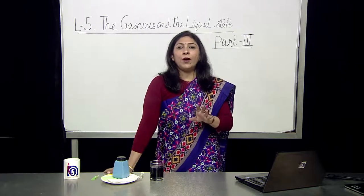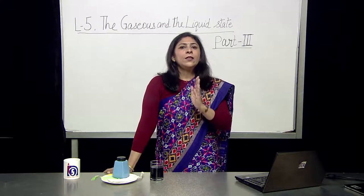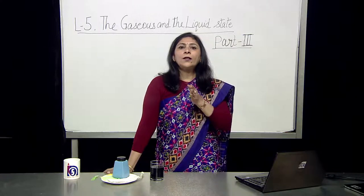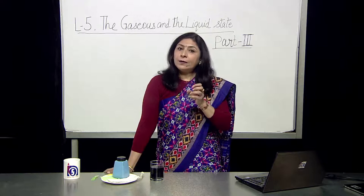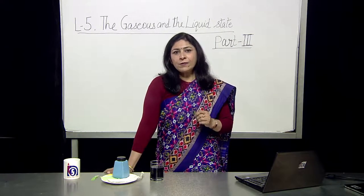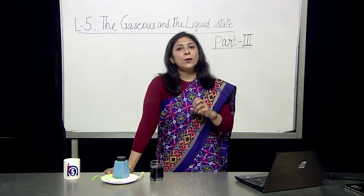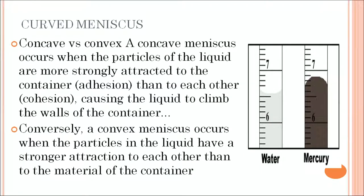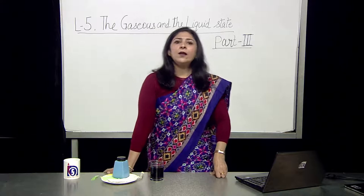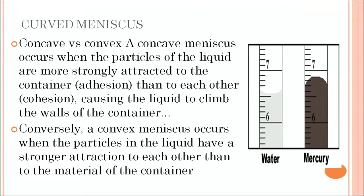When you remove mercury from a test tube, you find the test tube is totally dry. The reason is that adhesion — the attraction of liquid molecules to the surface — is present in the water case, but in mercury, cohesion is more. The molecules of mercury are more attracted to each other than to the surface. Conversely, a convex meniscus occurs when the particles in the liquid have stronger attraction to each other than to the material of the container. So in water we have a concave meniscus, while in mercury it is always convex because cohesion is greater than adhesion.